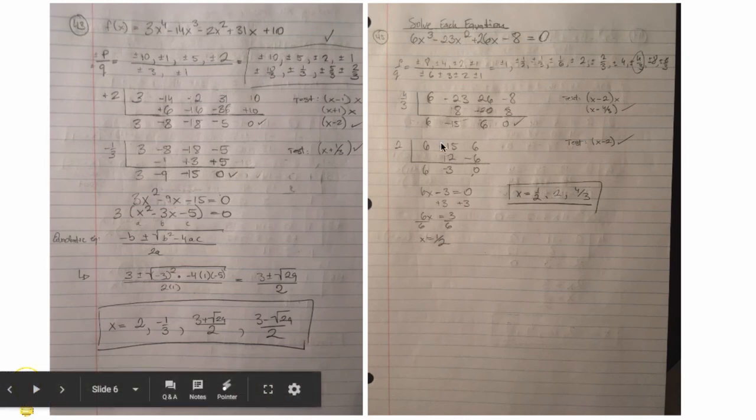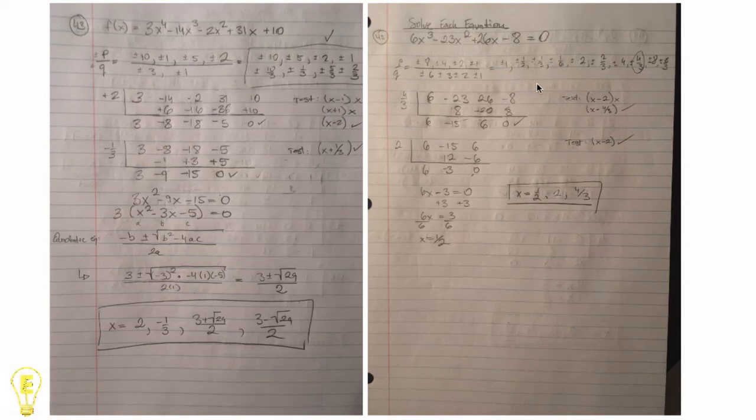45, same thing, you apply your PQ test, but we have a 6 here, so our Q got a little bit more complicated. There's a bunch of them. And then you continue to try each individual one synthetic division onto the coefficients until you get a 0. And it was 4 thirds, then you try 2. And then you're left with 6x minus 3 equals 0. Plus 3 divided by 6, you get x equals a half. And that's how you get your three roots.